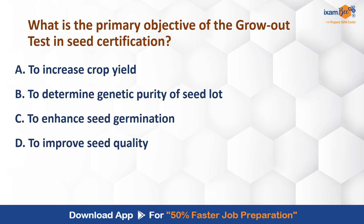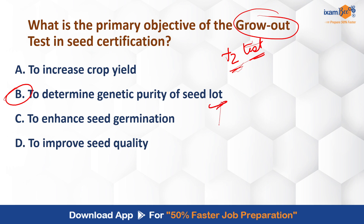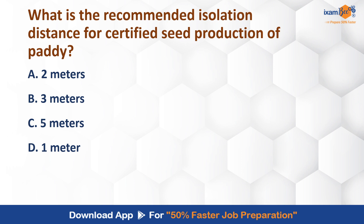What is the primary objective of the grow out test in seed certification? There are various tests — the TZ test (tetrazolium test) tells us about viability, but the grow out test is used to check the genetic purity of the seed lot. Seeds are germinated and observed to confirm the lot is homogenous. The recommended isolation distance for certified seed production of paddy — you can answer this in the chat box.